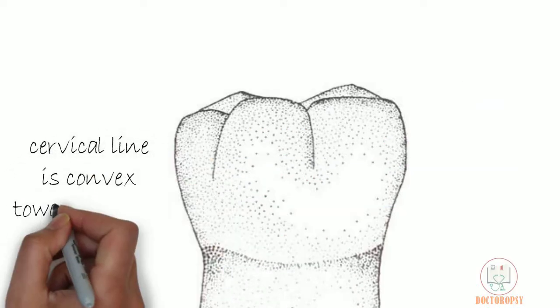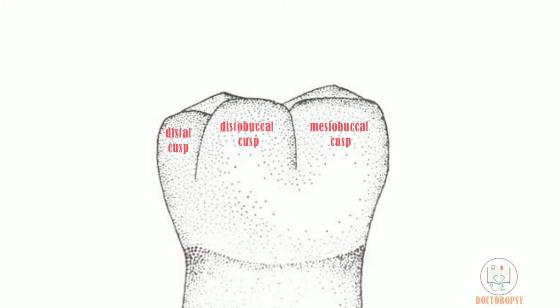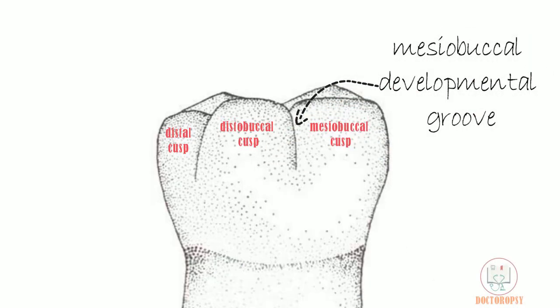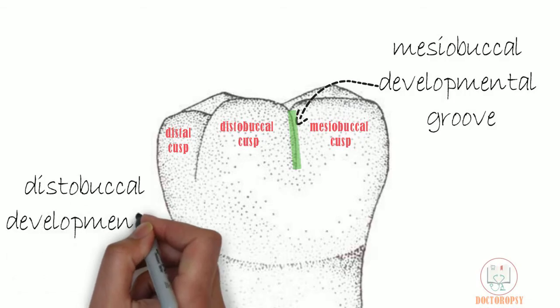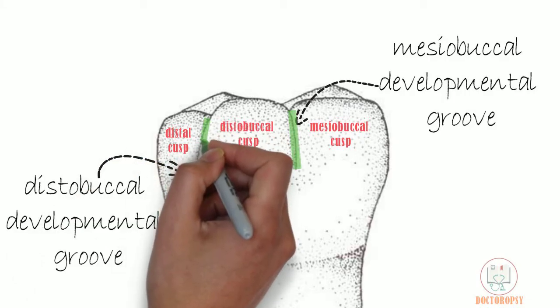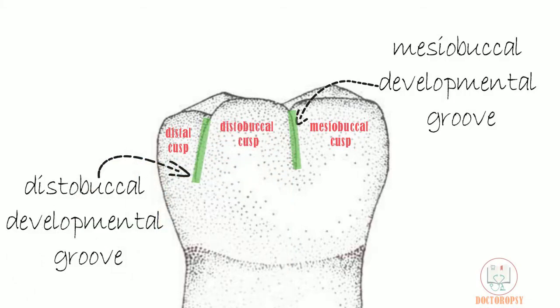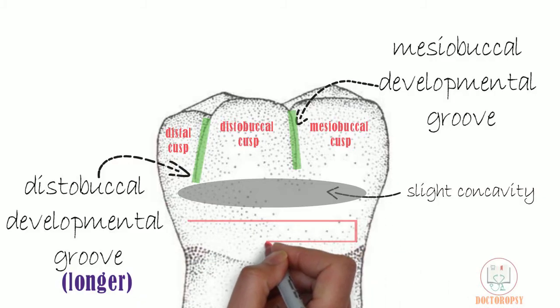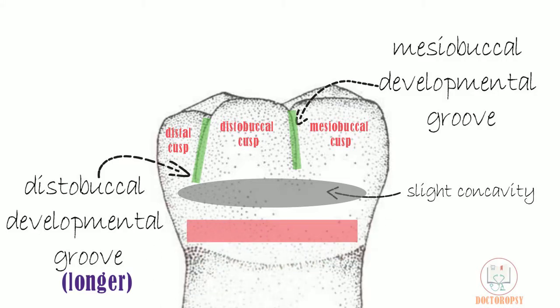The cervical line is convex towards the roots. On the buccal surface, 2 grooves are present between the 3 cusps: the mesiobuccal developmental groove between the mesiobuccal cusp and distobuccal cusp, and the distobuccal developmental groove between the distobuccal cusp and distal cusp. The distobuccal developmental groove is longer than the mesiobuccal developmental groove. A slight horizontal depression is seen in the middle third of the buccal surface, due to which a ridge is formed in the cervical third running mesiodistally, called the cervical ridge.